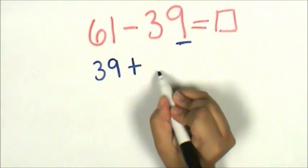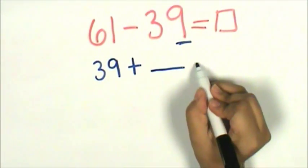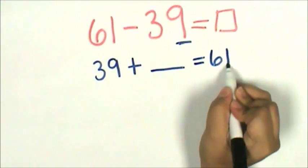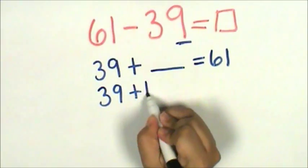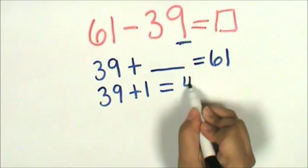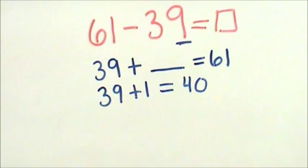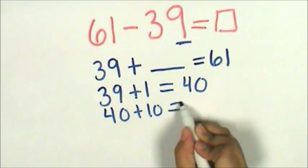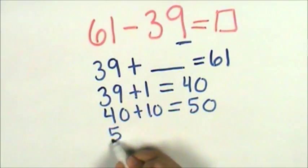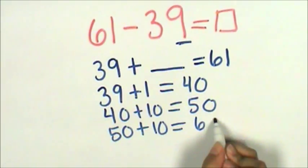Thirty-nine plus an unknown number equals sixty-one. I know that thirty-nine plus one equals forty. And now I can skip count by tens to get to sixty-one. Forty plus ten is fifty. Fifty plus ten is sixty.